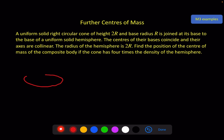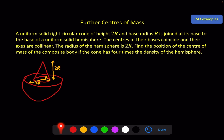I've drawn a hemisphere with the cone on top. The radius of the cone is r, the radius of the hemisphere is 2r, and the height of the cone is also 2r. Find the position of the centre of mass of the composite body if the cone has 4 times the density of the hemisphere.